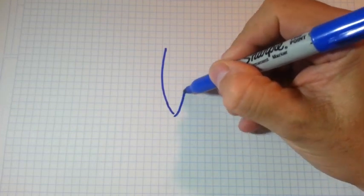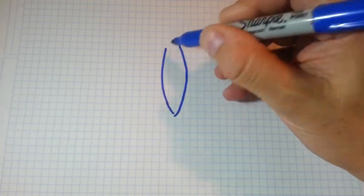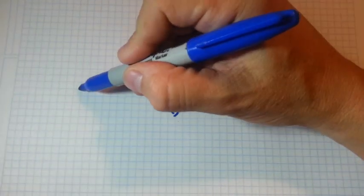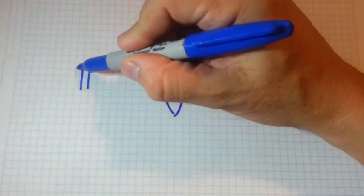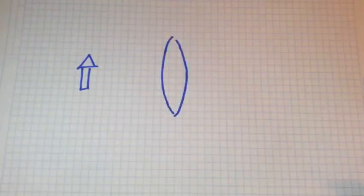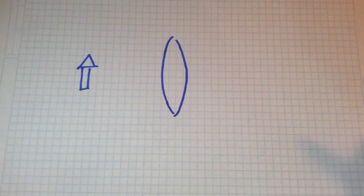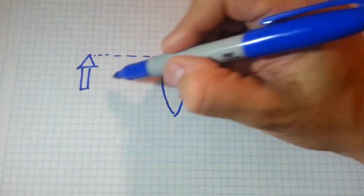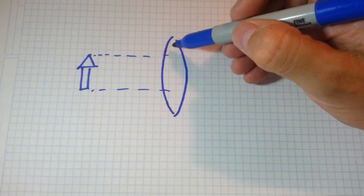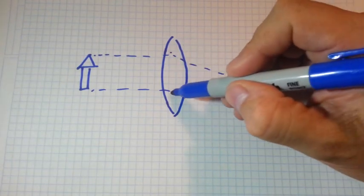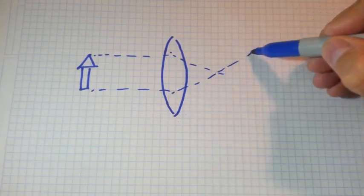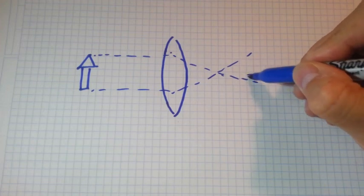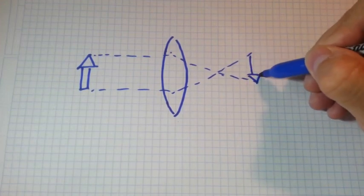The water in the glass behaves as a convex lens. Convex lenses have the property of turning an image upside down. The curvature of the lens bends the light in such a way that an inverted image of the original object is formed.